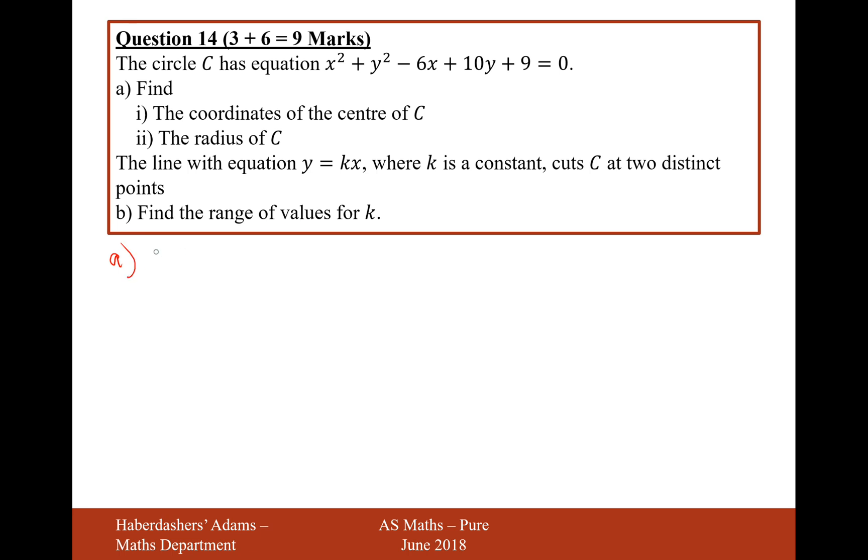Here we need a bit of double factorising, so it's x minus 3 squared minus the 9 on the x variable, and then plus y plus 5 squared, and then minus the 25 on the y variable, and then we've got the plus 9 at the end equals 0. This plus 9 and this plus 9 will cancel each other out, so let's now just move that 25 onto the other side. It's going to be x squared plus y plus 5 squared equals 25.